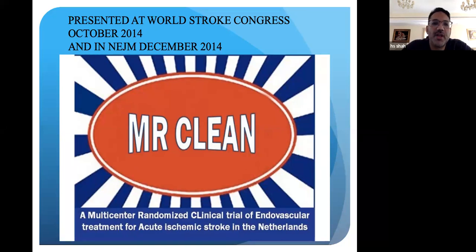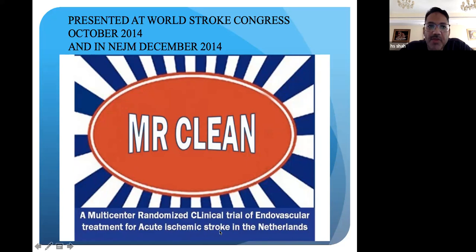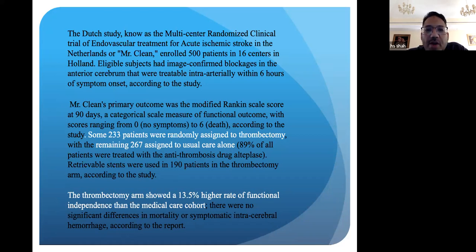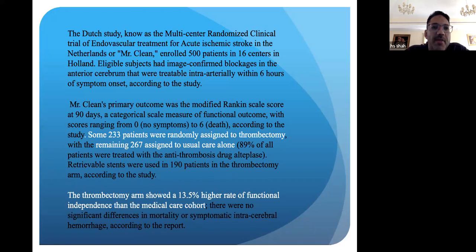In 2014, three big trials came out. The MR CLEAN trial — Multicenter Randomized Clinical trial of Endovascular treatment for Acute ischemic stroke in the Netherlands — came out in December 2014 with 233 patients for mechanical thrombectomy. The outcomes were so good that it was decided it would be unethical to continue the non-thrombectomy arm of the trial. The alteplase arm was stopped because the thrombectomy arm was showing such good improvement in neurological outcomes and improvement in mortality as well.